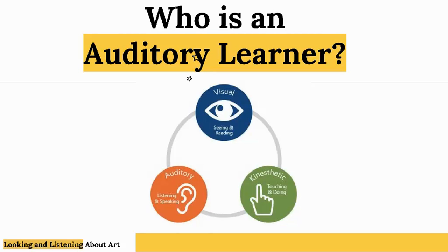Who is an auditory learner? The VAP learning style model informs us that our adult students can be placed into three categories: visual, auditory, and kinesthetic. Simply put, auditory learners learn through listening. Written information has little meaning until it is heard. Characteristics of an auditory learner include that they like to talk, they are easily distracted by sounds, remember names, they are extroverts, and prefer lectures and discussions.